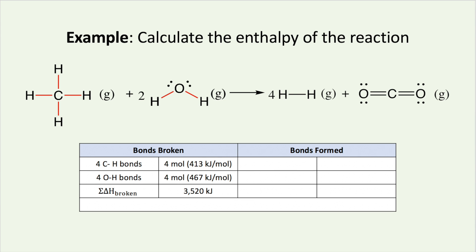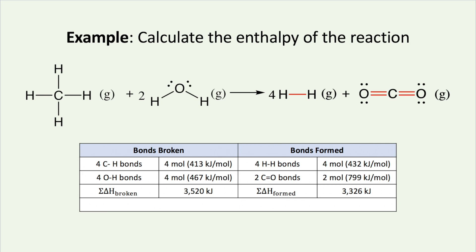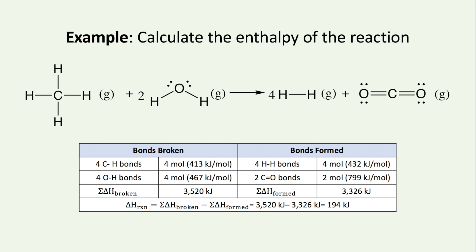For bonds formed, there are four hydrogen hydrogen bonds and two carbon double bonded oxygen bonds forming, which is a sum of 3326 kJ. If we plug these values into Hess's equation, the enthalpy of reaction is 194 kJ. This is an endothermic reaction because the enthalpy of reaction was positive. In order for this reaction to occur, energy must be added to the system.